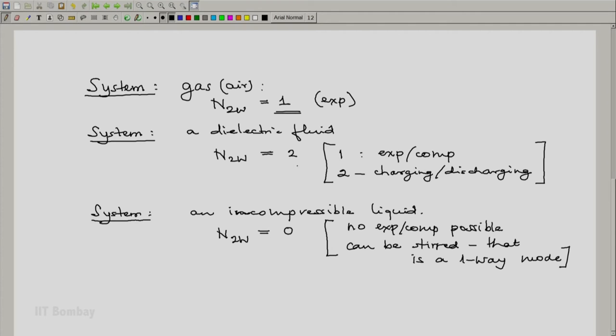So here we have seen illustrations of systems where you can have a single two-way work mode or a system with two two-way work modes and even a system with zero two-way work modes.